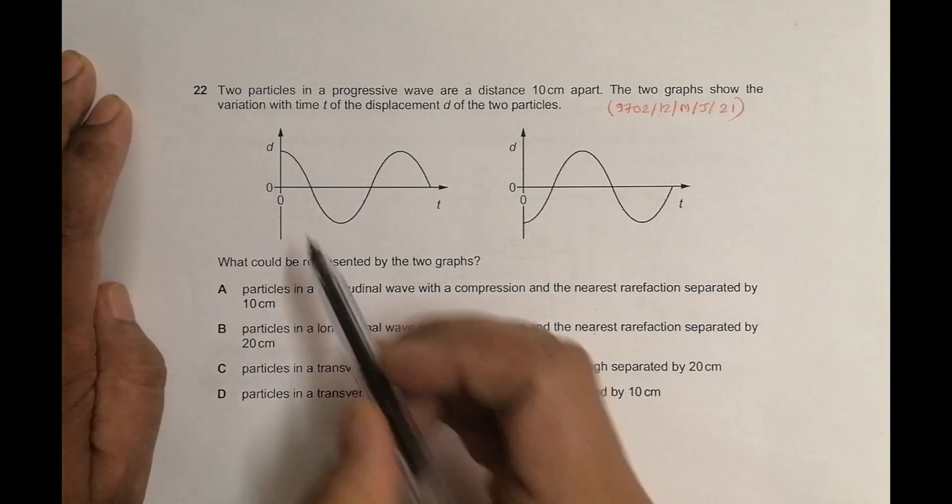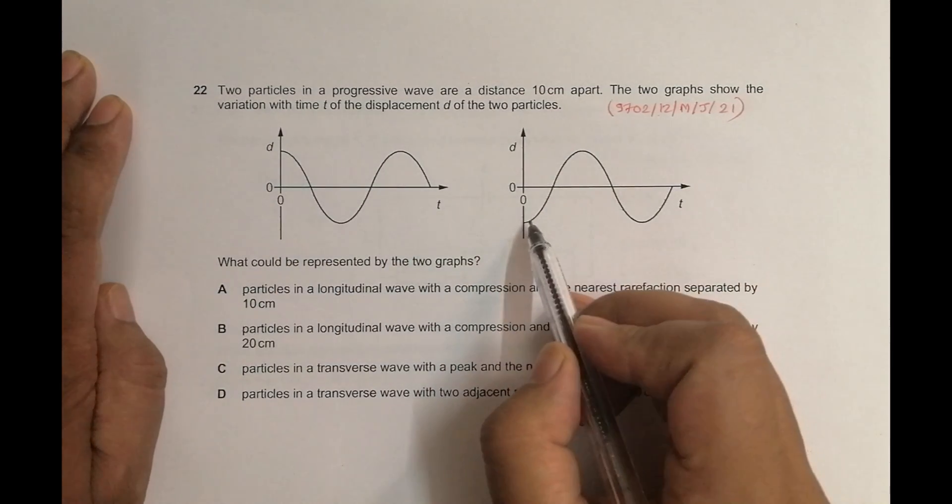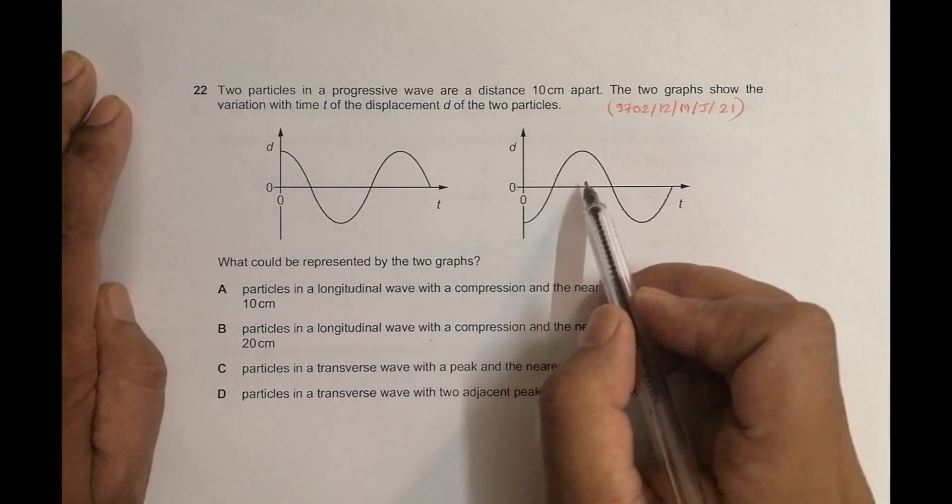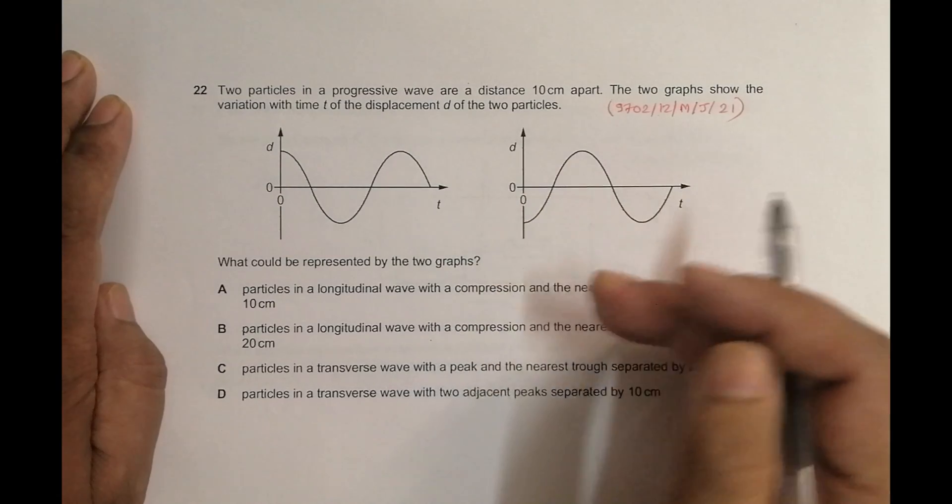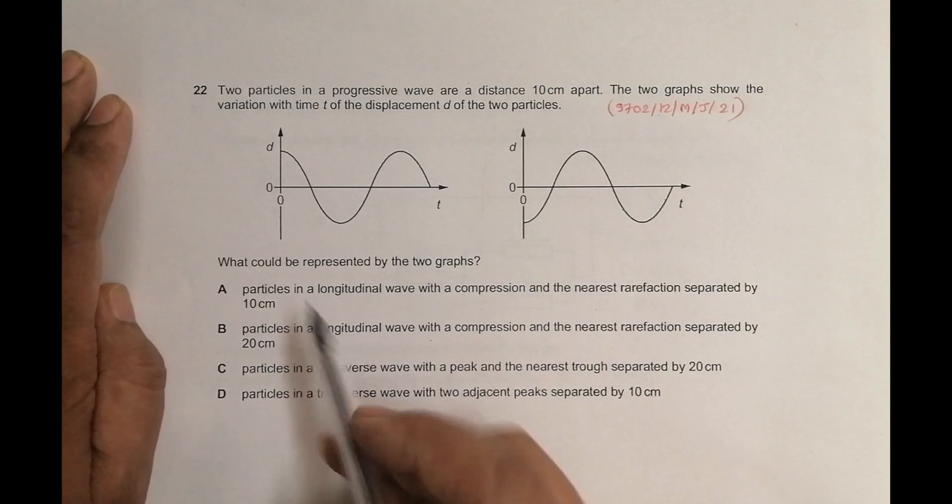As you can see from the figure, when one particle is performing maximum displacement, at the same time another is having maximum negative displacement. When the other goes for negative displacement maximum, the second one goes to the positive displacement maximum. So they are exactly anti of each other. They exactly perform opposite movements to each other.